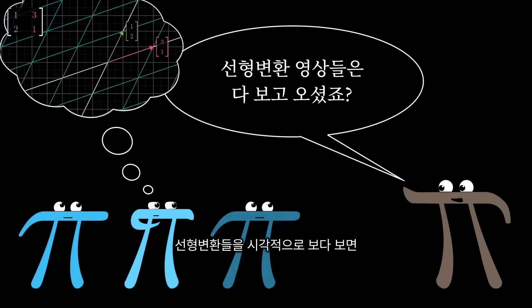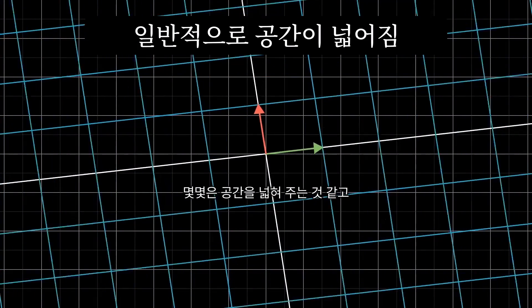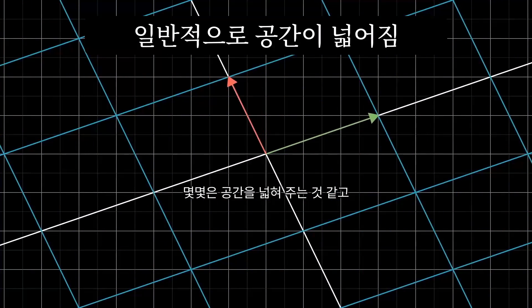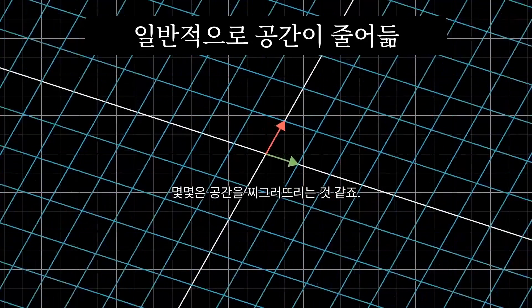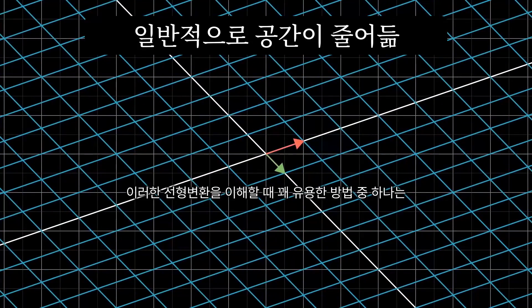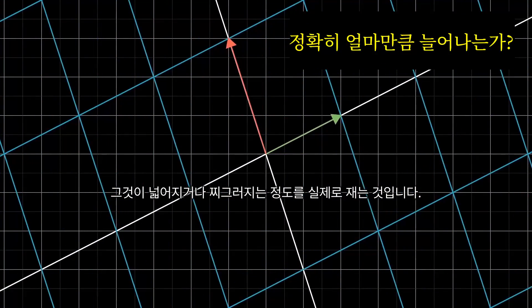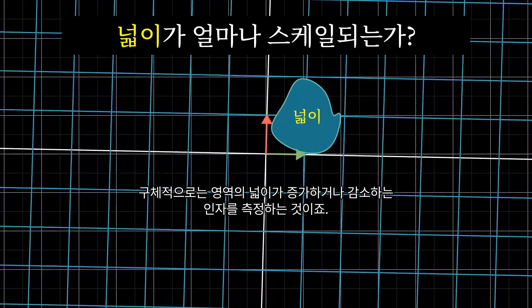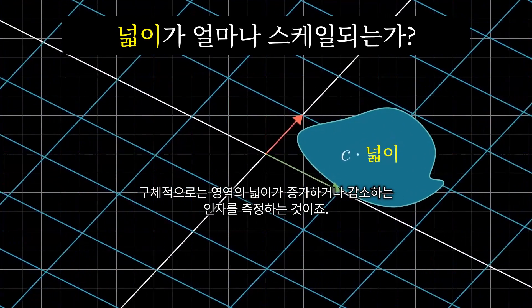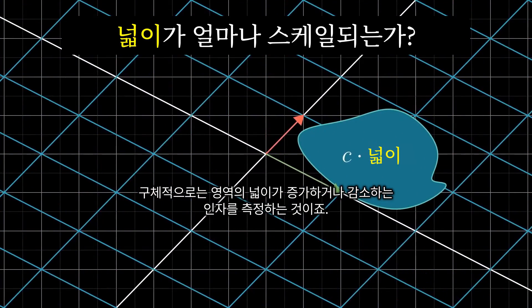If you think about a couple of these linear transformations, you might notice how some of them seem to stretch space out, while others squish it on in. One thing that turns out to be pretty useful for understanding one of these transformations is to measure exactly how much it stretches or squishes things. More specifically, to measure the factor by which the area of a given region increases or decreases.